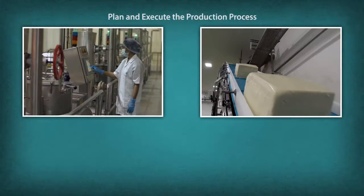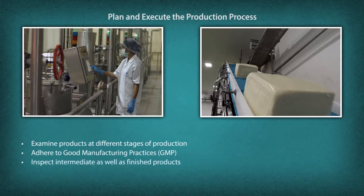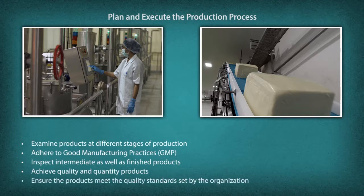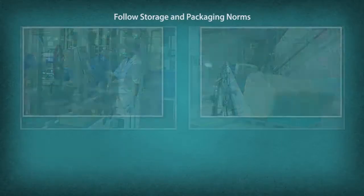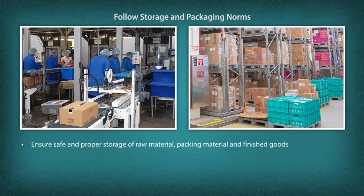Plan and execute the production process. Examine products at different stages of production. Adhere to good manufacturing practices. Inspect intermediate as well as finished products. Achieve quality and quantity products. Ensure the products meet the quality standards set by the organization. Follow storage and packaging norms. Ensure safe and proper storage of raw material, packaging material and finished goods.